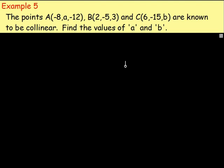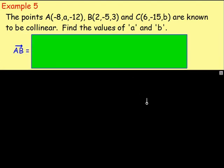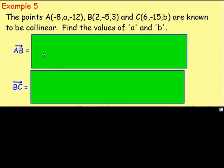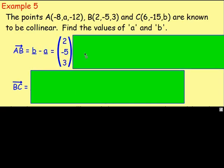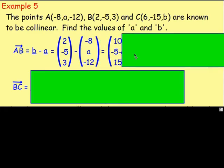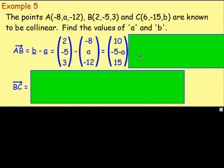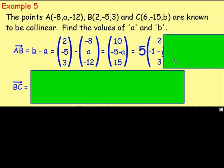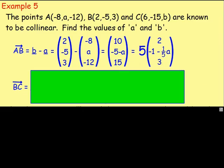To start, we find vectors AB and BC. AB is B minus A: (2, -5, 3) take away (-8, A, -12). That gives us (10, -5 minus A, 15). I can take out 5 as a common factor, giving 5 times (2, -1 minus A/5, 3).